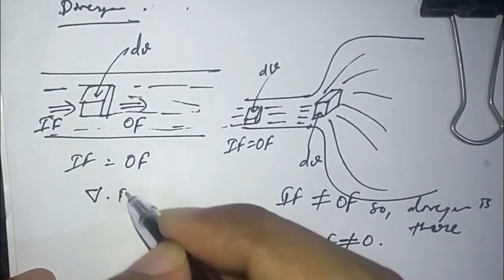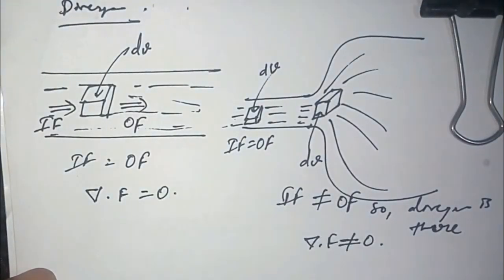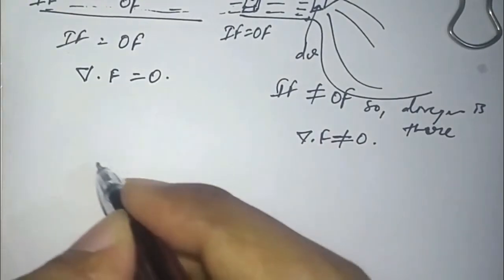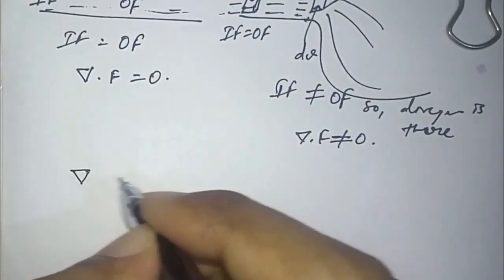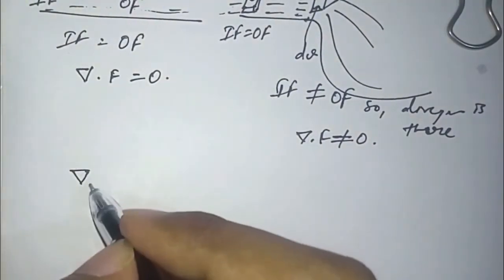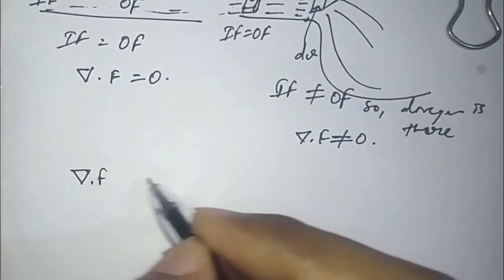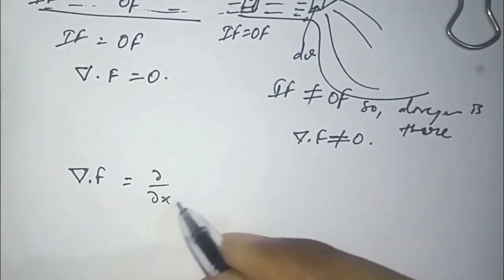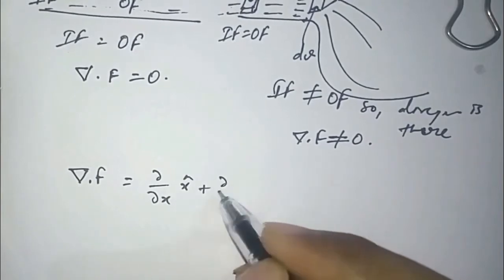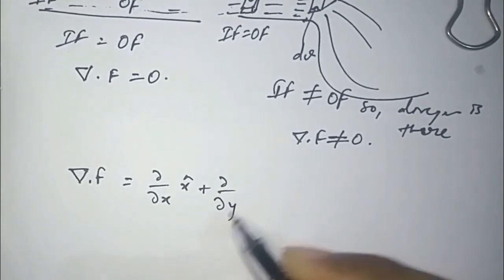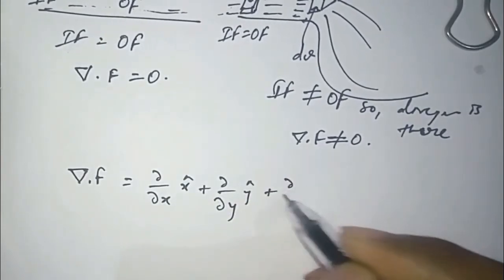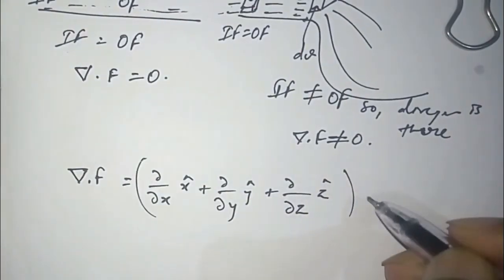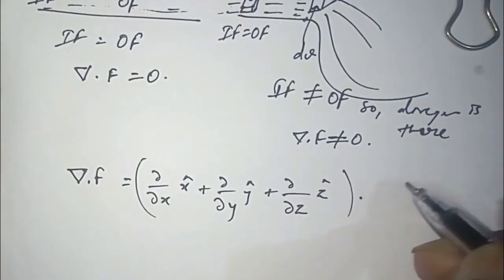In the first case, the divergence of the field is not equal to zero, and in the constant-flow case, divergence of the field is equal to zero. To compute divergence, we take the dot product of the differential del operator with the field F.